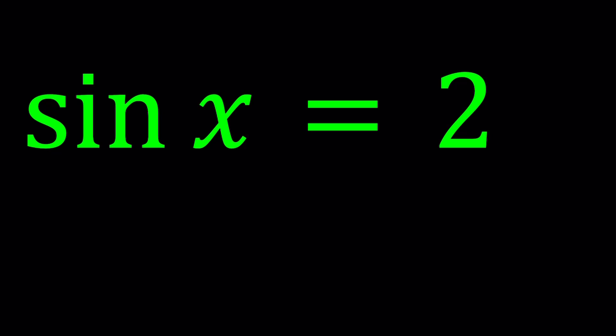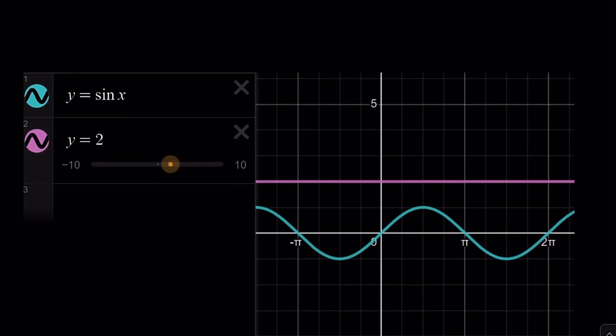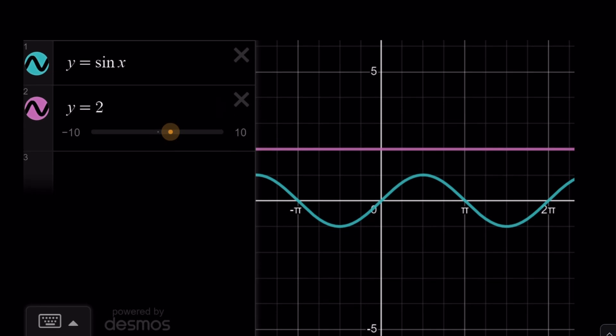Before we start solving this problem, I'm going to show you a graph which will explain a couple of different things and then we'll proceed with the solution. Here's the graph of y equals sine x and y equals 2. If there was a real solution, then we would have intersection points, right?